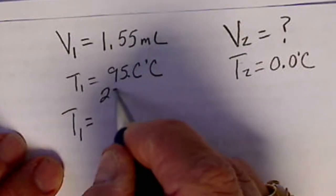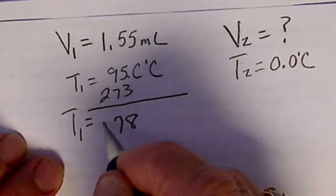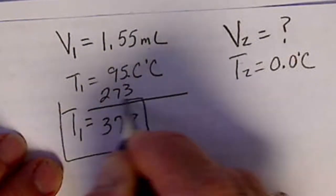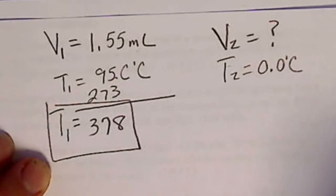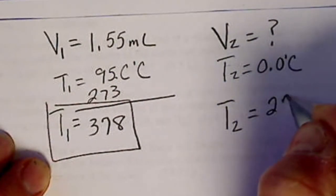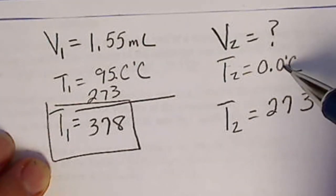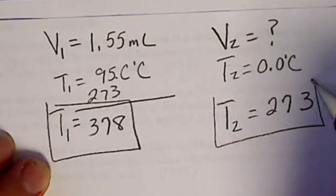We're going to add 273 to this, and we'll have 8, 17 carry the 1. So our temperature is 378. T2 is going to be 273, because 273 plus 0 is still 273.